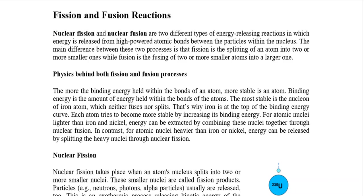Iron itself is at the top of the binding energy curve — it is the most stable nucleus in the periodic table. Atoms with atomic numbers less than iron will fuse together to form more stable nuclei moving toward iron; that process is called fusion reaction. Atoms with atomic numbers greater than iron will split to form more stable nuclei toward iron; that is what we call nuclear fission.